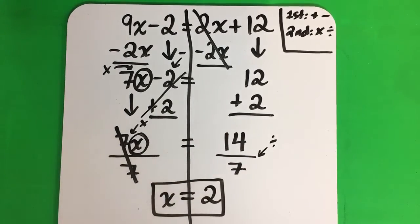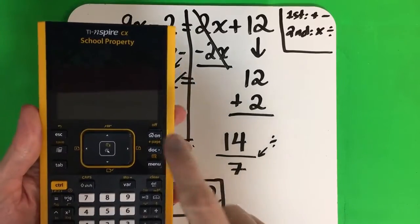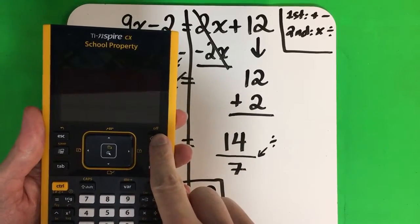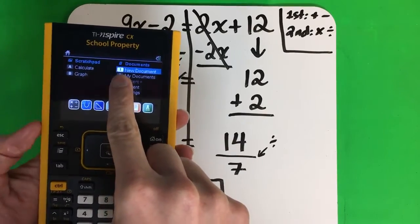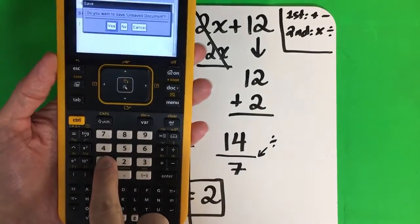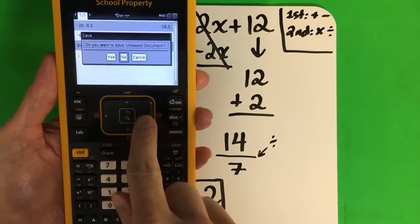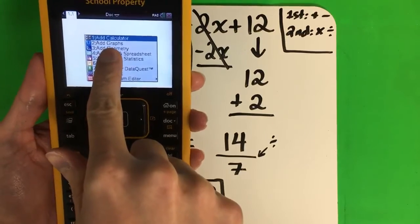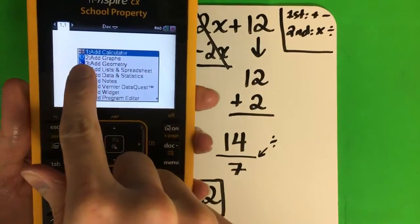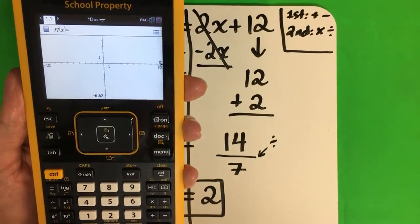Now we're going to check it with the calculator. I have my TI-Nspire here. First you're going to push on, then I want new document — number 1, so push 1. Just always push no, go to the right, push enter. I want to check it with a graph. Graph is number 2. So you're going to get a graph like this.